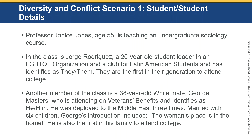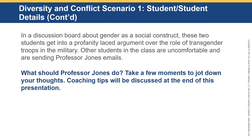In this scenario, Professor Janice Jones, age 55, is teaching an undergraduate sociology course. In the class is Jorge Rodriguez, a 20-year-old student leader in an LGBTQ+ organization and a club for Latin American students, who identifies as they/them and is the first in their generation to attend college. Another student is 38-year-old white male George Masters, attending on veterans benefits and identifying as he/him, deployed to the Middle East three times, married with six children. His introduction included the statement that a woman's place is in the home. In a discussion board about gender as a social construct, these two students get into a profanity-laced argument over the role of transgender troops in the military, making other students uncomfortable. What should Professor Jones do? Take a few moments to jot down your thoughts — coaching tips will be discussed at the end.